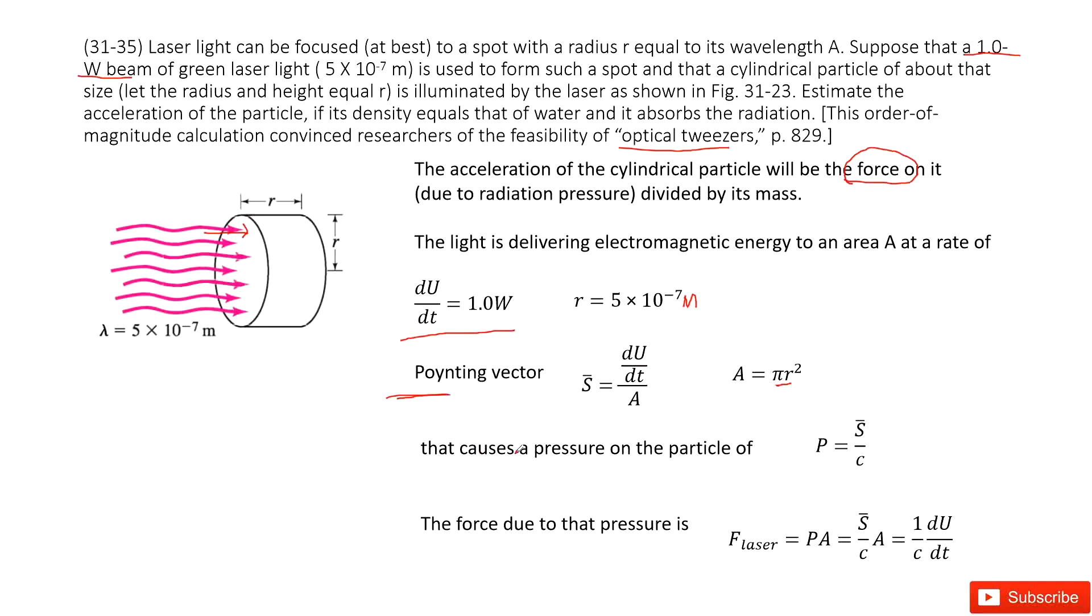Now, this can cause a pressure on the particle. The pressure P on the particle is the Poynting vector divided by c, where c is the speed of light.